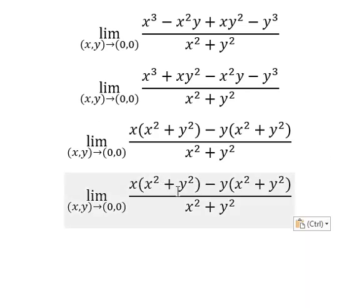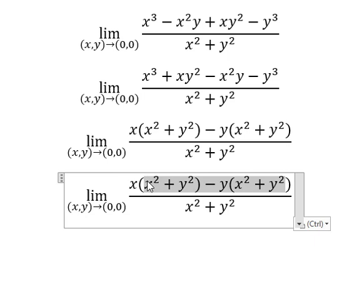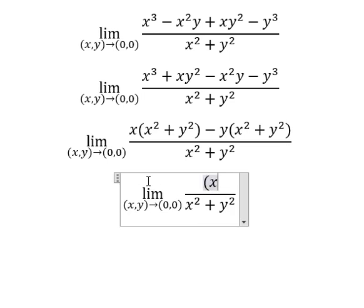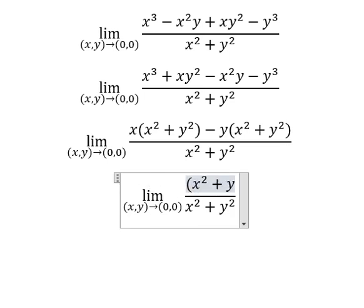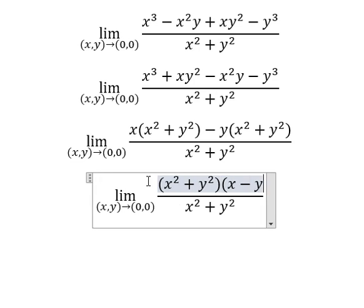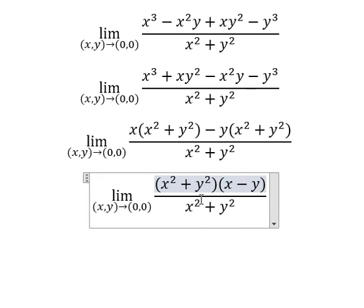So we have x squared plus y squared. We can do factorization again, so this one divided by this one, and we have x minus y.